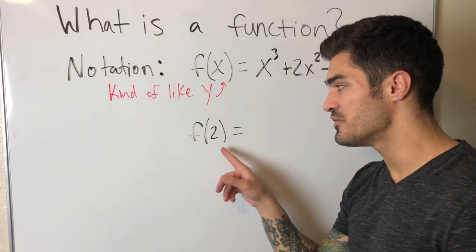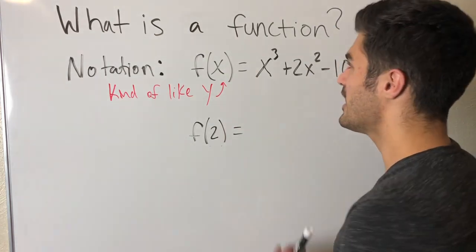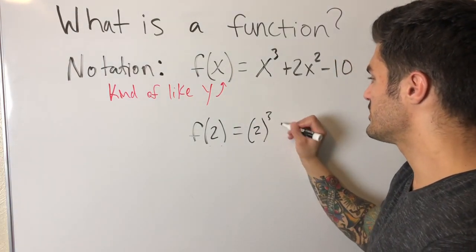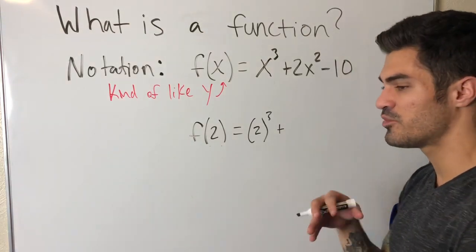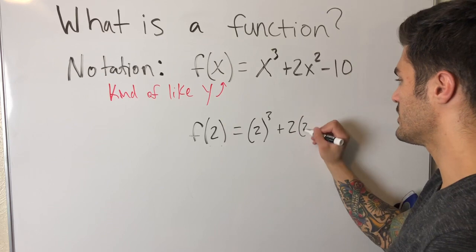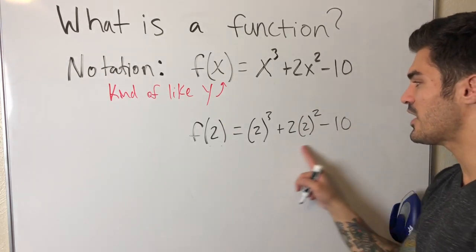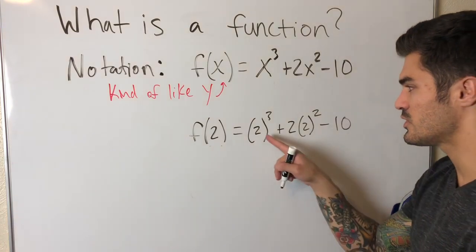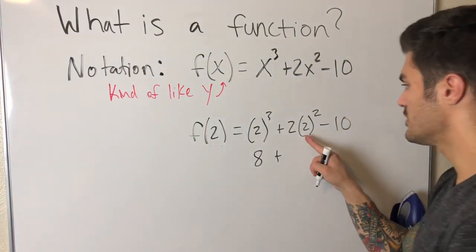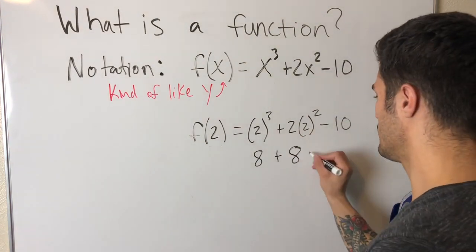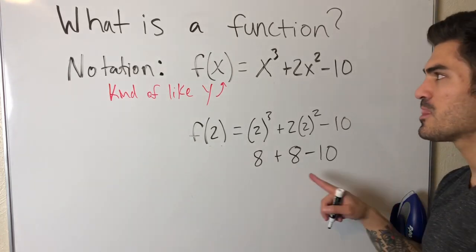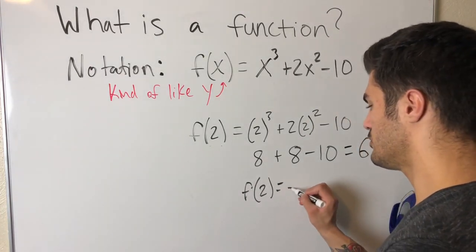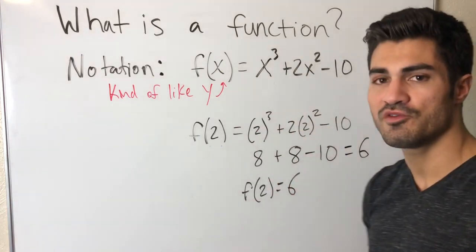Let's evaluate one more function: f(x) = x³ + 2x² - 10, and find f(2). We replace all x's with 2, using parentheses to stay organized. So: (2)³ + 2(2)² - 10. That's 8 + 2(4) - 10 = 8 + 8 - 10 = 6. So f(2) = 6 — when we plug 2 in, we get out 6.